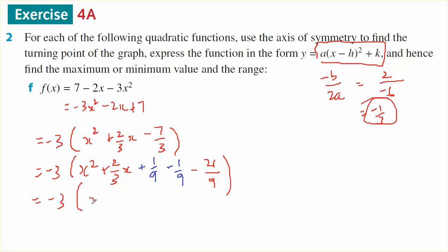-3(x + 1/3)², minus 21/9, which is -3(x + 1/3)² plus 21/3, which should be 7.